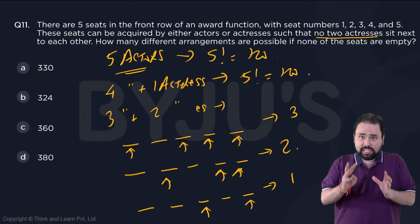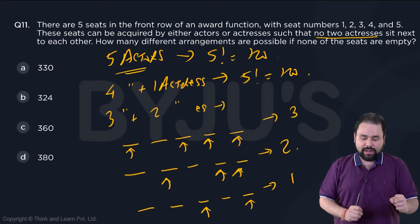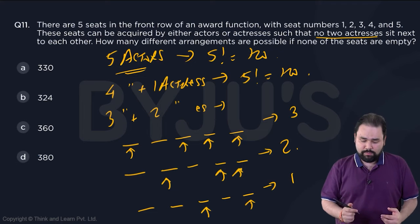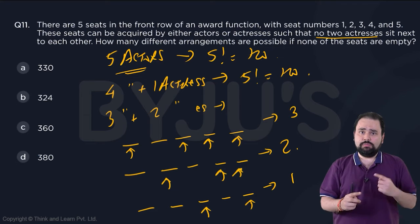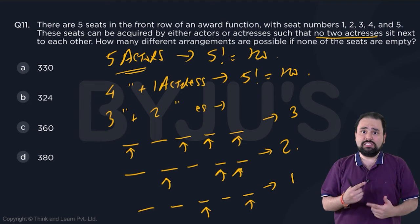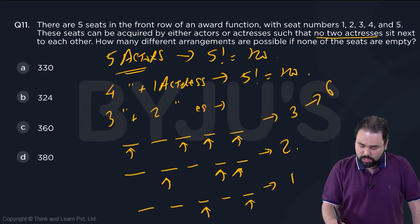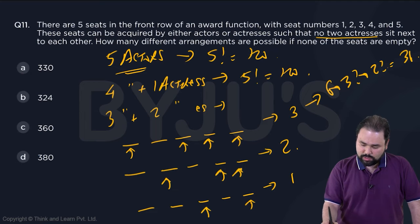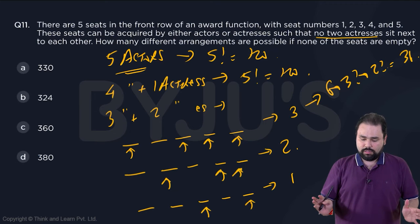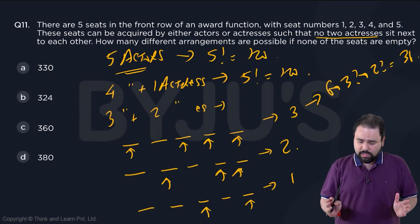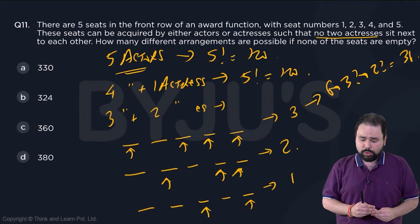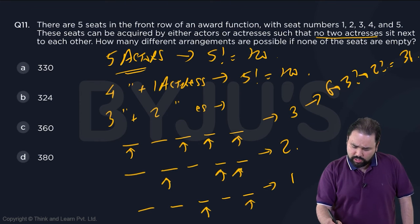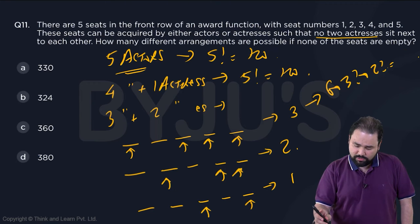So in six of these cases, there will be three actors and two actresses. In each of them, the actors can arrange among themselves in 3 factorial ways, actresses in 2 factorial ways. That means you get 6 × 3! × 2!, which is 6 × 6... oh I think I got it wrong. 3 factorial is 6, 6 × 2 is 12, 12 × 6 is 72. So this is 72.